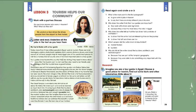Unit 5, Lesson 3, Page 98, Exercise 2. Listen and read: Underline all the jobs in the text as you hear them. My trip to Nubia with a tour guide. Today, more than 3 million people in Egypt work in tourism.